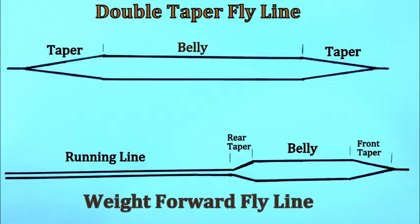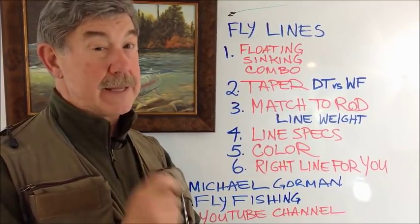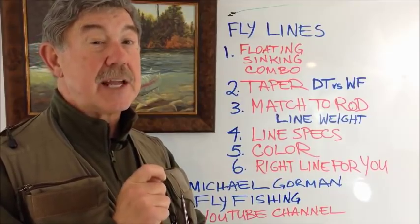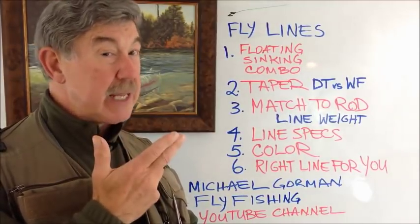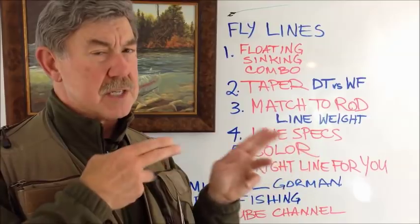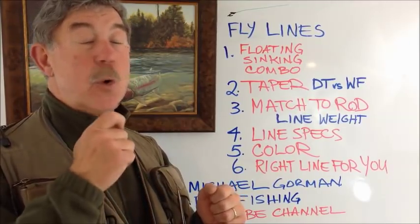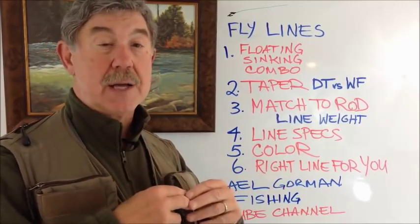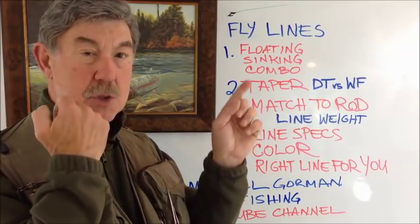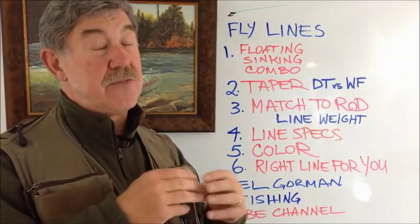The weight forward taper really has four advantages. Number one: if you need to cast for distance, the weight forward line will do the job more easily than a double taper. Secondly, if you need to cast in the wind, the design of the weight forward better enables you to pierce the wind with a good cast, whereas a double taper gets blown around. Thirdly, if you're casting large air-resistant flies — like a bass bug, an oversized dry fly, or heavily weighted flies — the weight forward taper's momentum carries through the entire line and leader all the way to the fly for a better presentation.